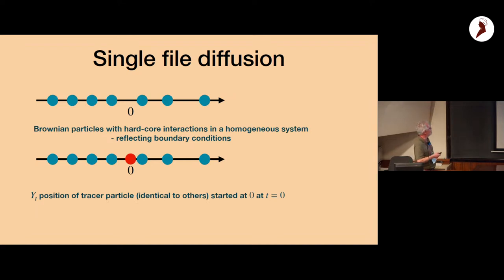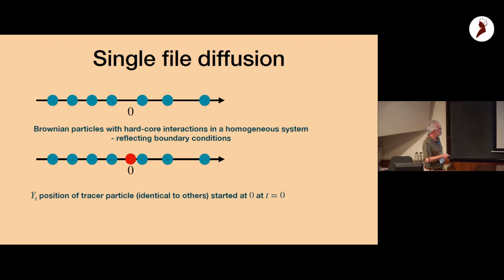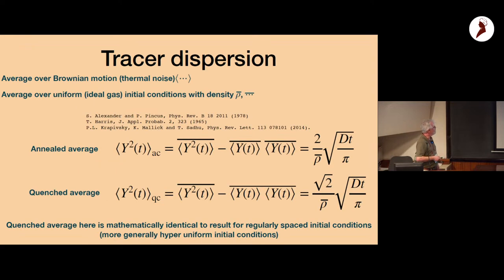Now for single file diffusion. Everybody knows what this is: you have Brownian particles with hardcore interactions in a homogeneous system. When particles come next to each other the red particle is reflected by the blue one. We take this tracer particle and let it evolve on an infinite line, asking about its position over time. It gets blocked by surrounding particles, but volume fluctuations allow it to disperse.